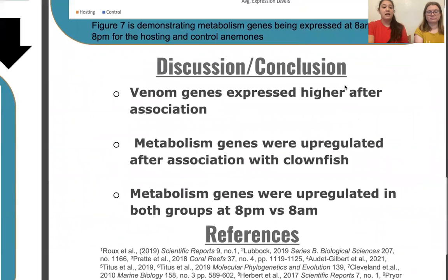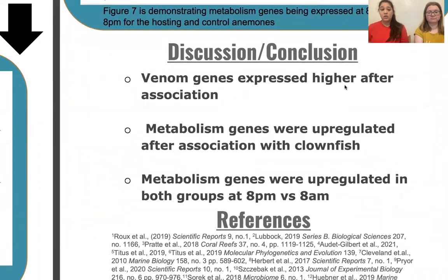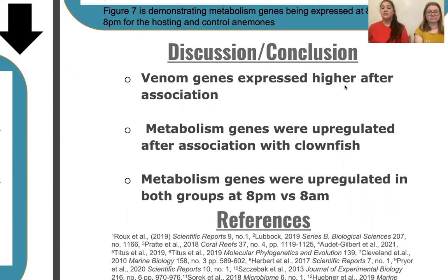In conclusion, we found that metabolism and venom genes were being upregulated by anemones hosting clownfish. We found a difference between 8am and 8pm expression depending on symbiont activity. One of the major take-home messages is that the relationship between clownfish, zooxanthellae, and sea anemones is interconnected and much more complicated than science previously thought. We cannot determine from our study alone whether it was the clownfish directly benefiting the sea anemone or benefiting it through the zooxanthellae. Future research should evaluate gene expression within zooxanthellae to formally understand the symbiotic relationship all three organisms participate in.